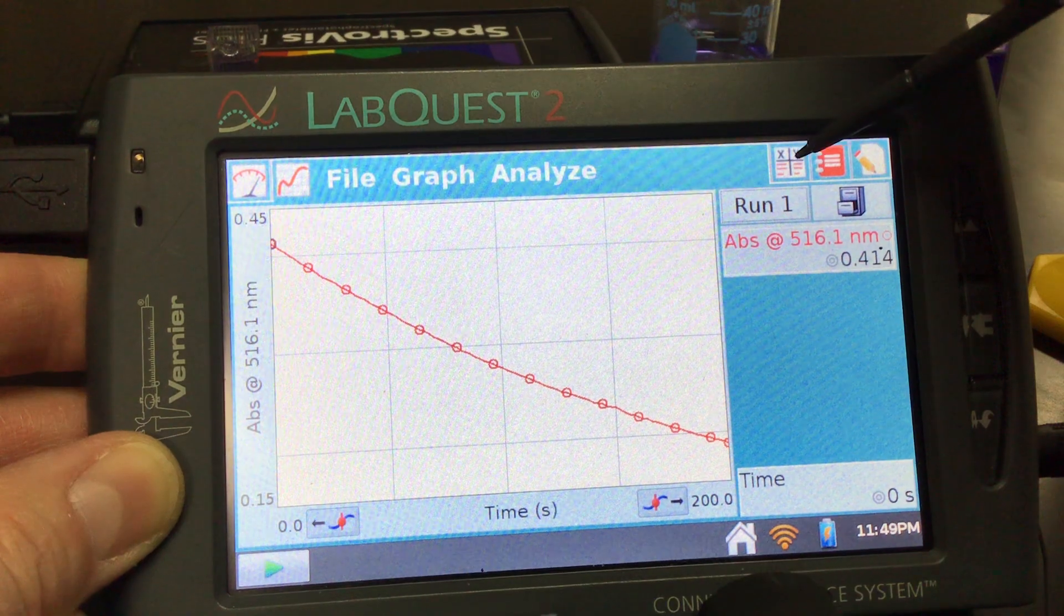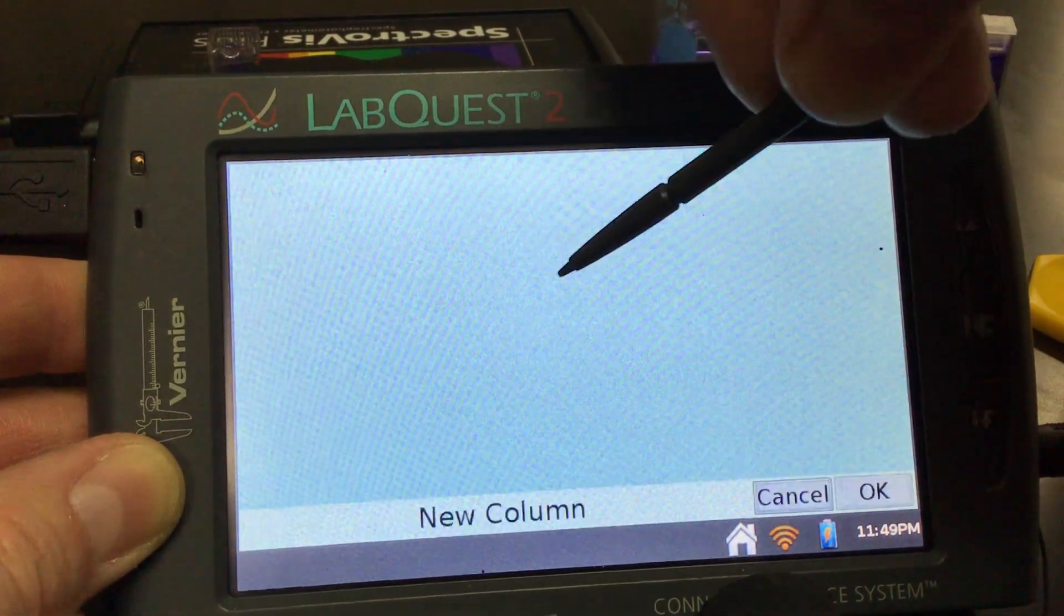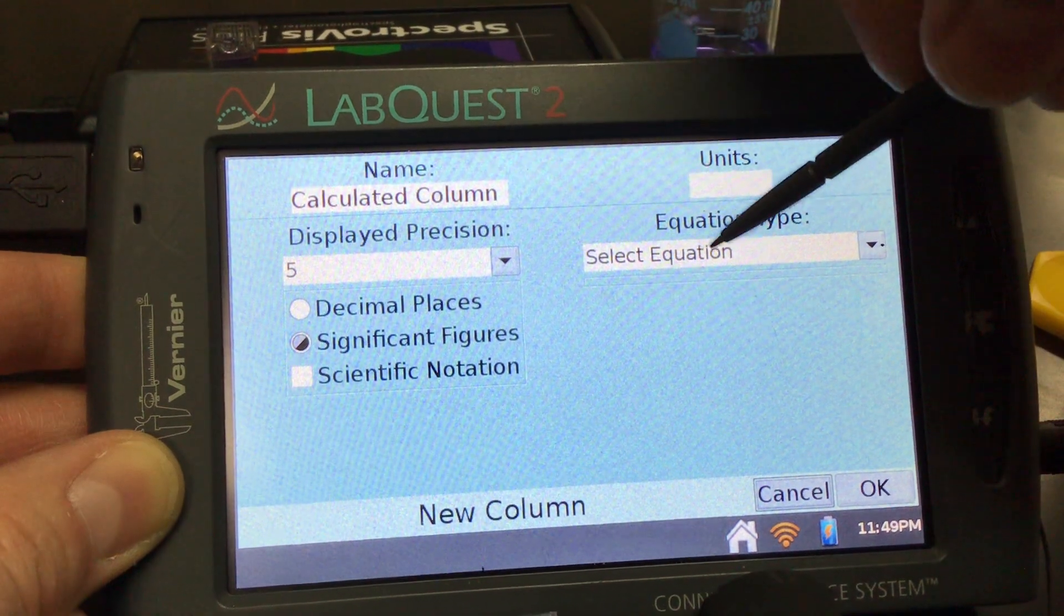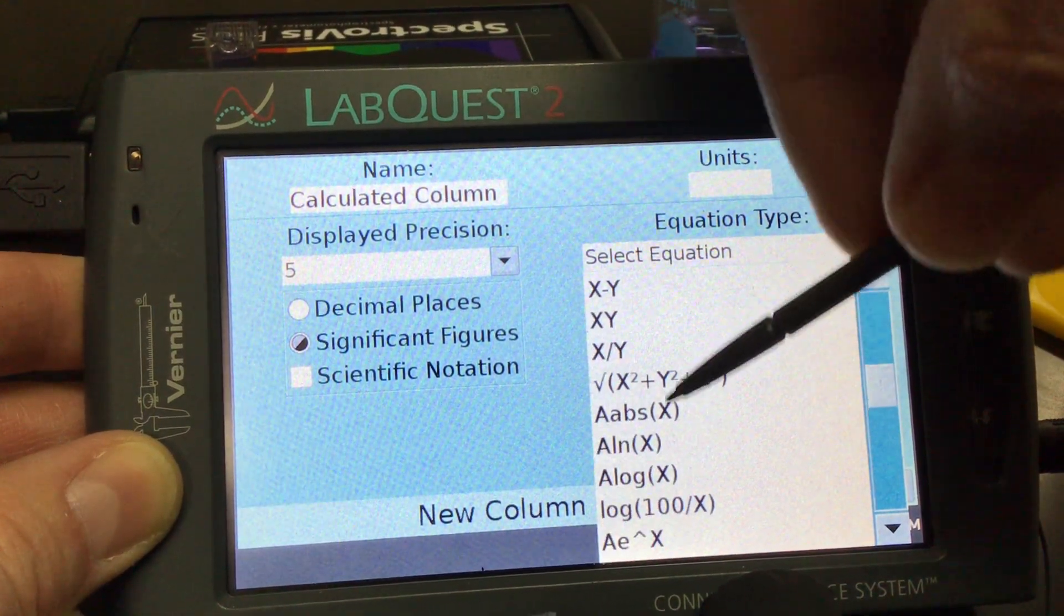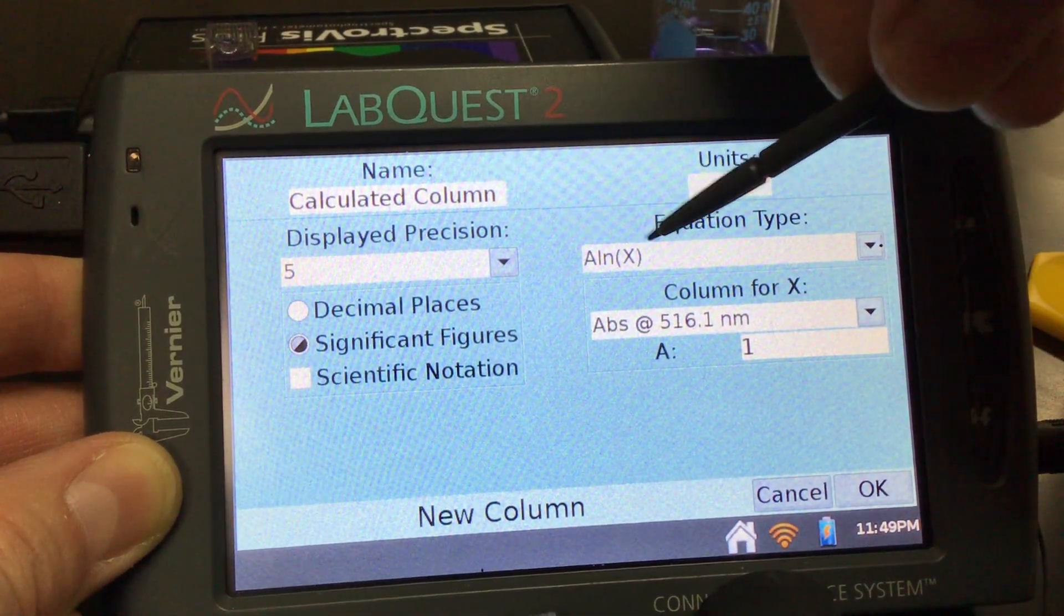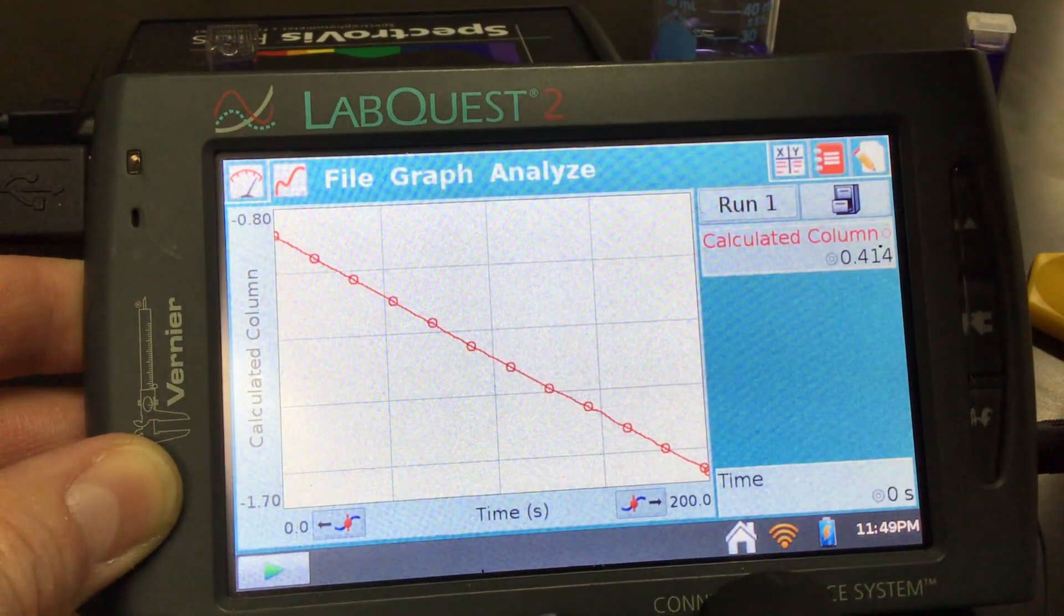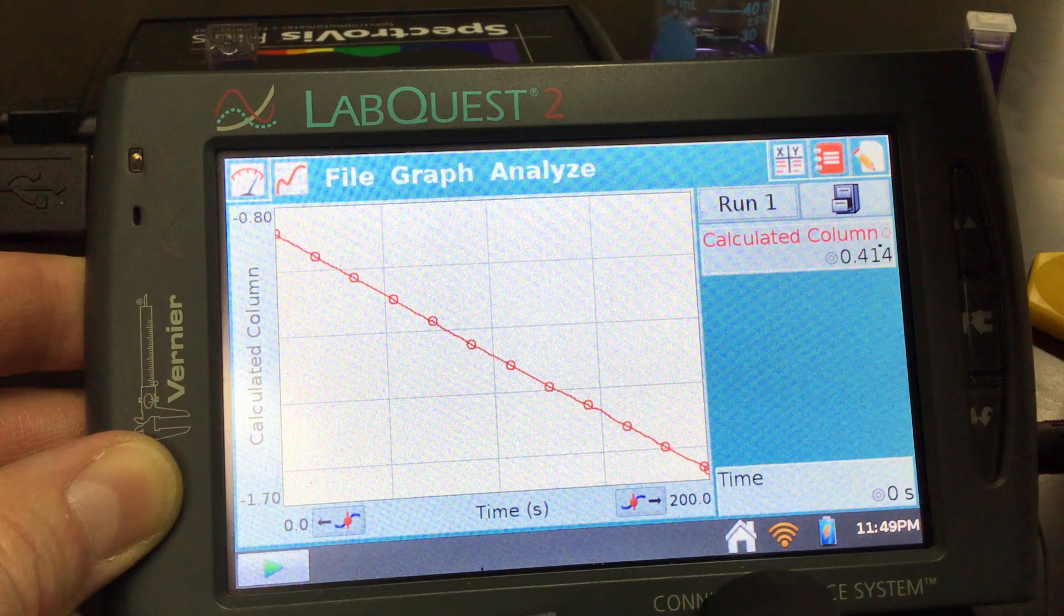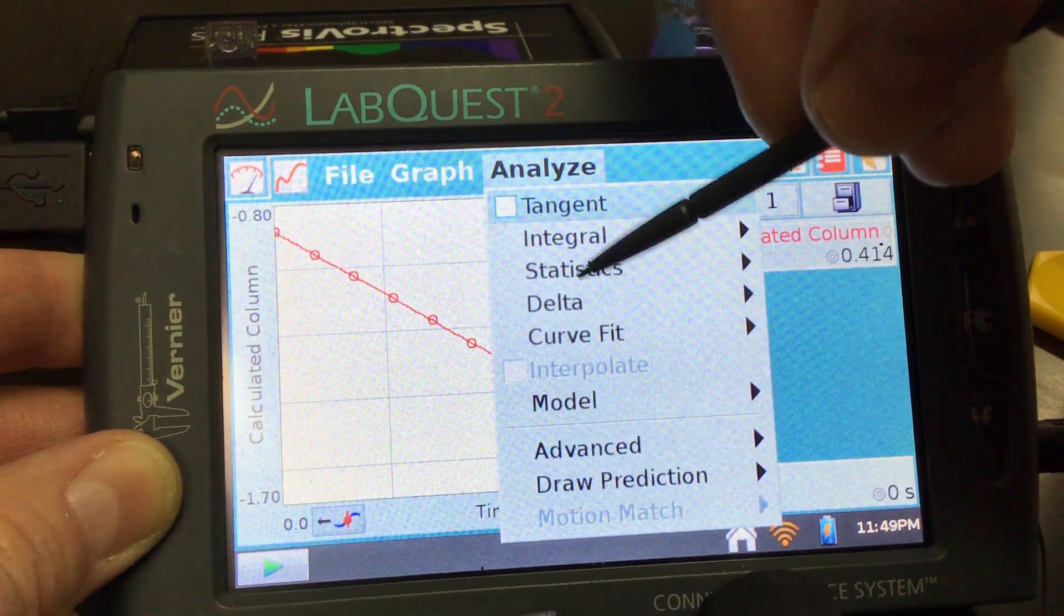We're going to go into our table on the top right and we're going to create a new calculated column. We're going to tell it to do the natural log of absorbance to see if we have... the natural log of our absorbance here. That's going to tell us if it's linear. Yeah, it looks very, very linear there.